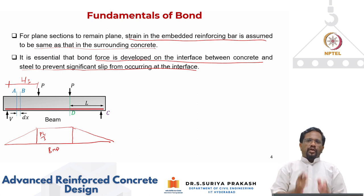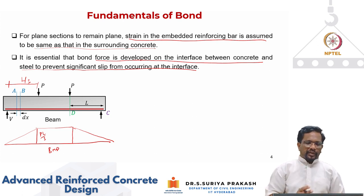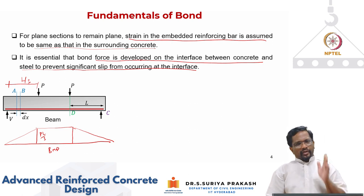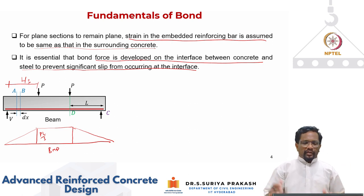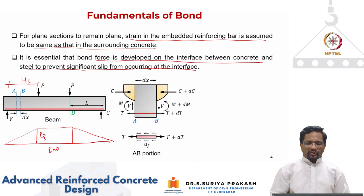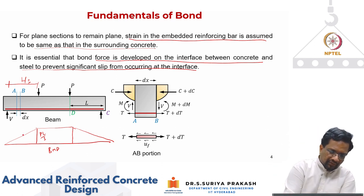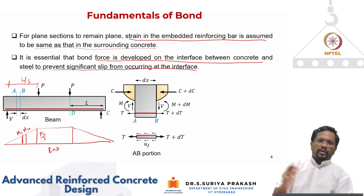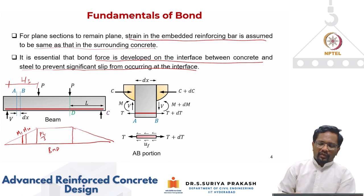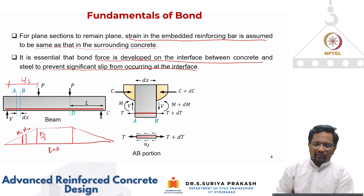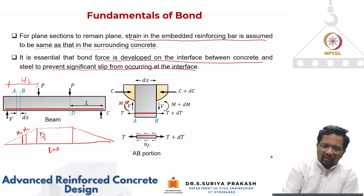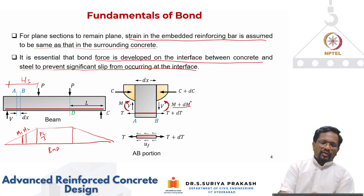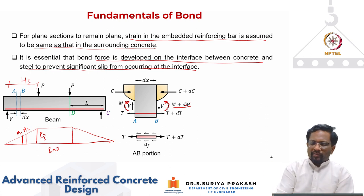If I take a small elemental length dx between sections A and B, and look at the free body diagram for forces in concrete and steel on the left and right sides — that is, on section A and section B — at section A you have some bending moment M1, and at section B you have bending moment M2, where M2 is greater than M1. Since shear is constant, we write the increased bending moment as M and M plus dM. The change in moment between the two sections spaced at dx is dM.